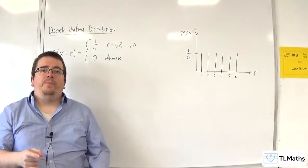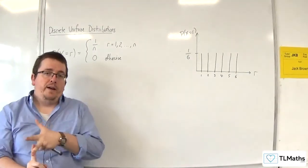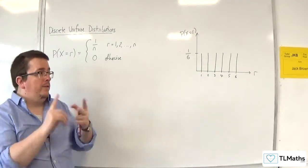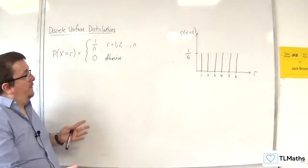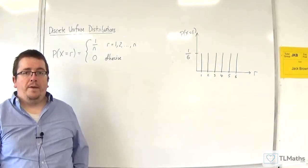So what we want to do next is we want to take a look at how can we find E of x and Var of x for the discrete uniform distribution, and then we want to see if we can do a little bit of problem solving with it.